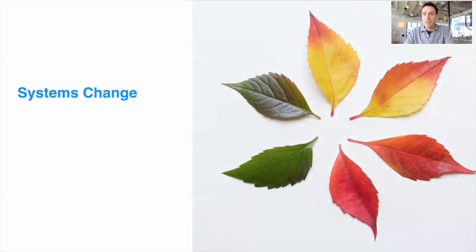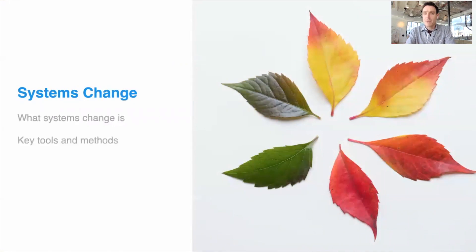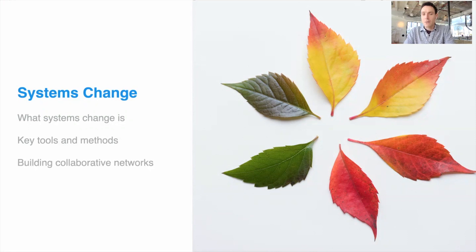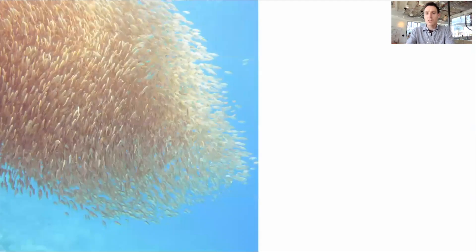The third section focuses on systems change — what exactly it is and what tools and methods can help us enable a more transformative kind of change that's really needed to create a more sustainable world. We'll explore how we can build new forms of collaborations, new platforms, and new networks that bring people together for realizing that. Those are the core ideas of systems change.